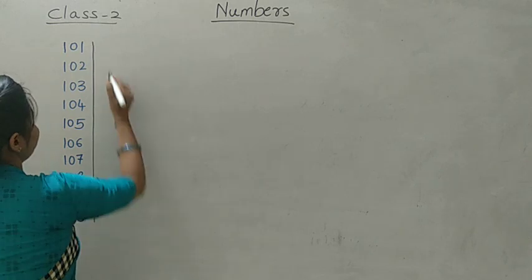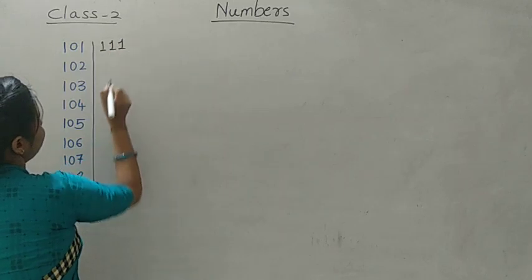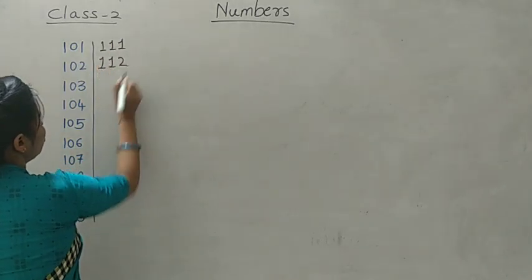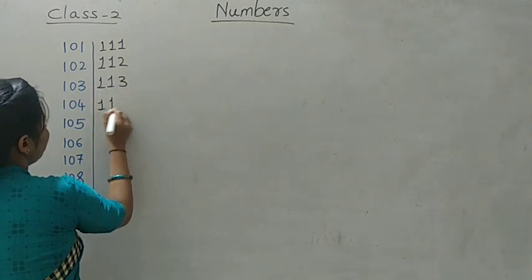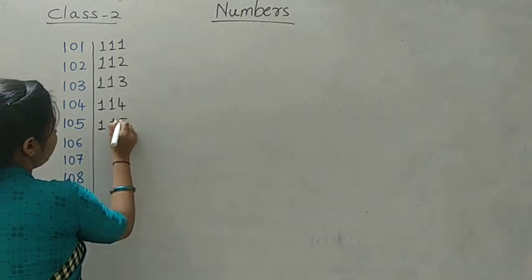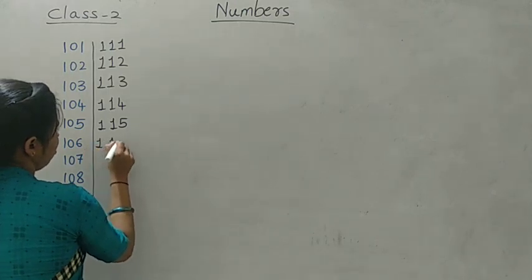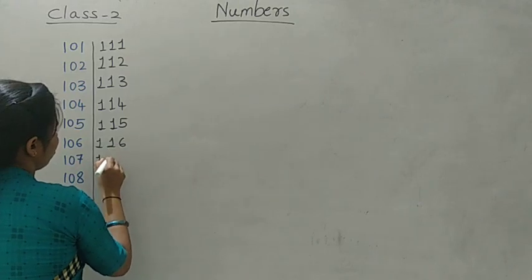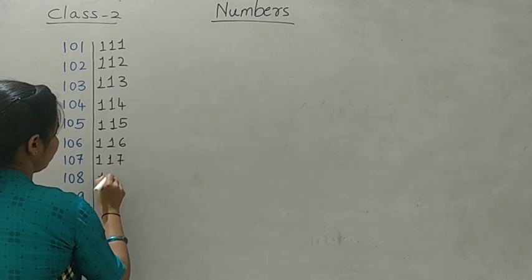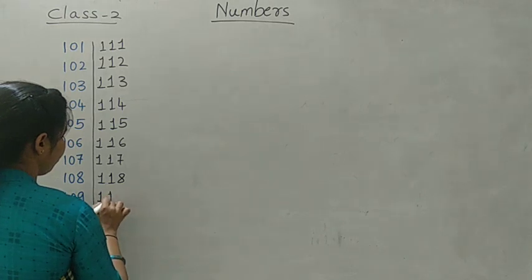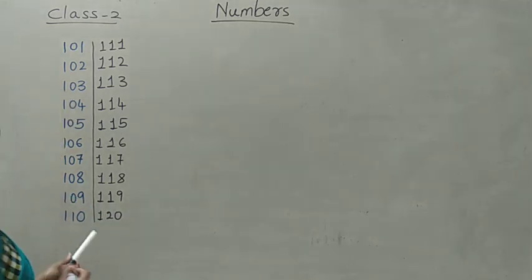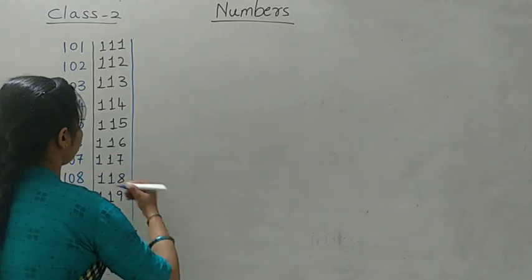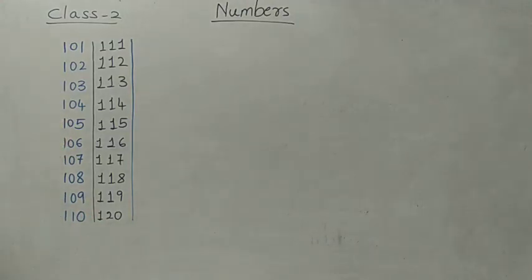Next line. Write the next line: 110, 111, 112, 113, 114, 115, 116, 117, 118, 119. Take a scale and draw a proper straight line.